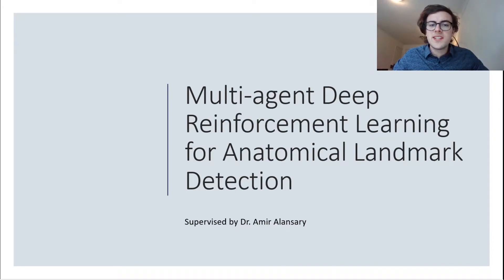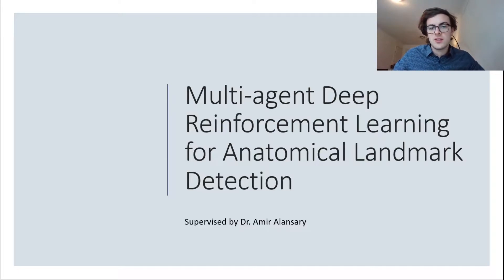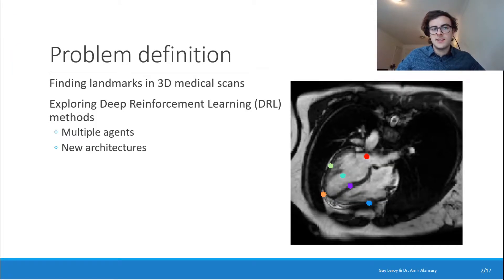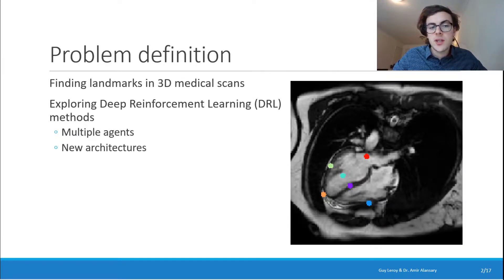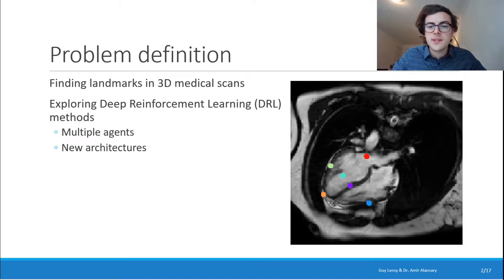Today, I'll be presenting my master's thesis titled Multi-Agent Deep Reinforcement Learning for Anatomical Landmark Detection. As the name suggests, it's about finding landmarks in 3D medical scans while exploring deep reinforcement learning methods, such as multiple agents and trying out new architectures. On the right, we can see a cardiac scan with six colored dots, each representing a precise location within the heart, and our goal is to have agents that automatically find those landmarks.